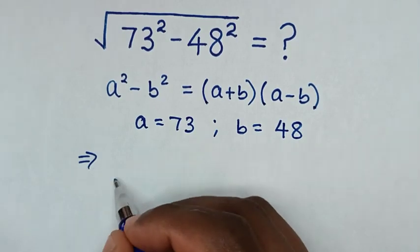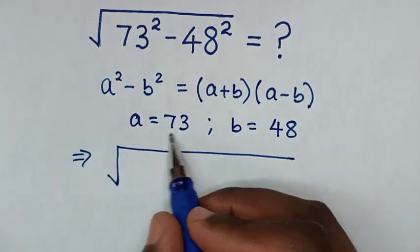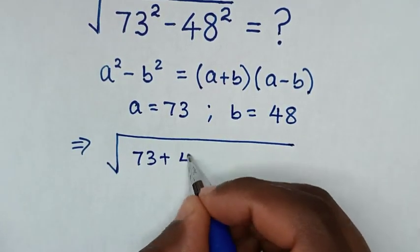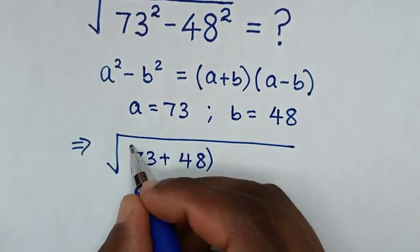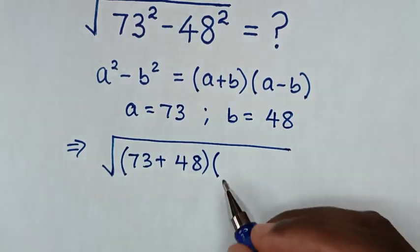Then it will be square root of a plus b, which is 73 plus 48, bracket, a minus b, which is 73 minus 48.